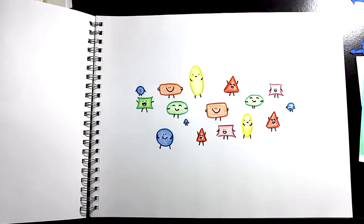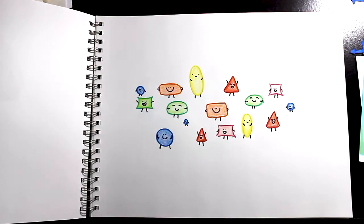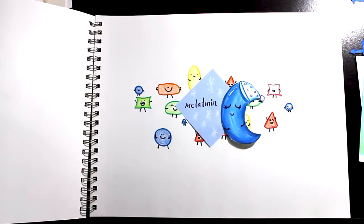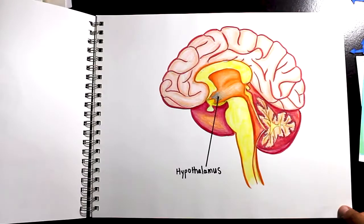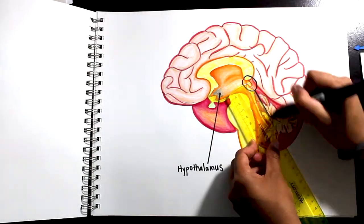One of the key players that signal to your body that it is time to sleep is melatonin. Melatonin is produced in a part of the brain called the pineal gland.